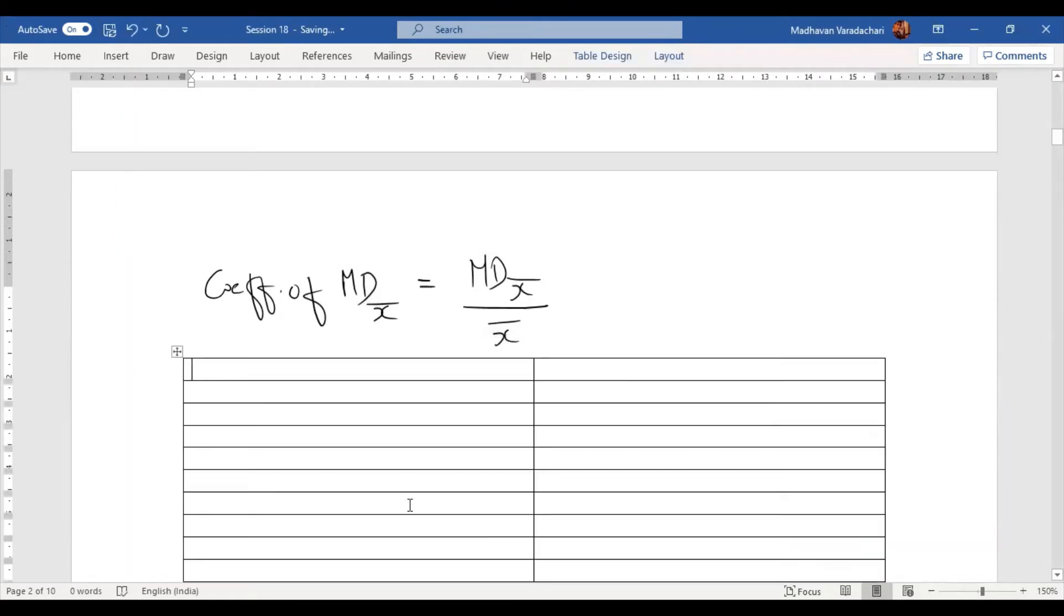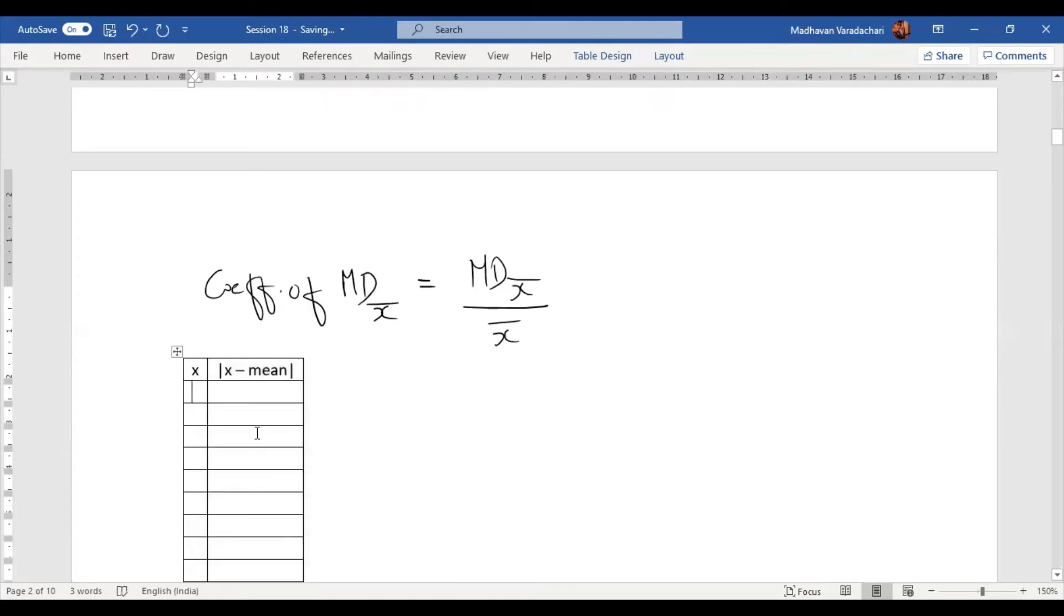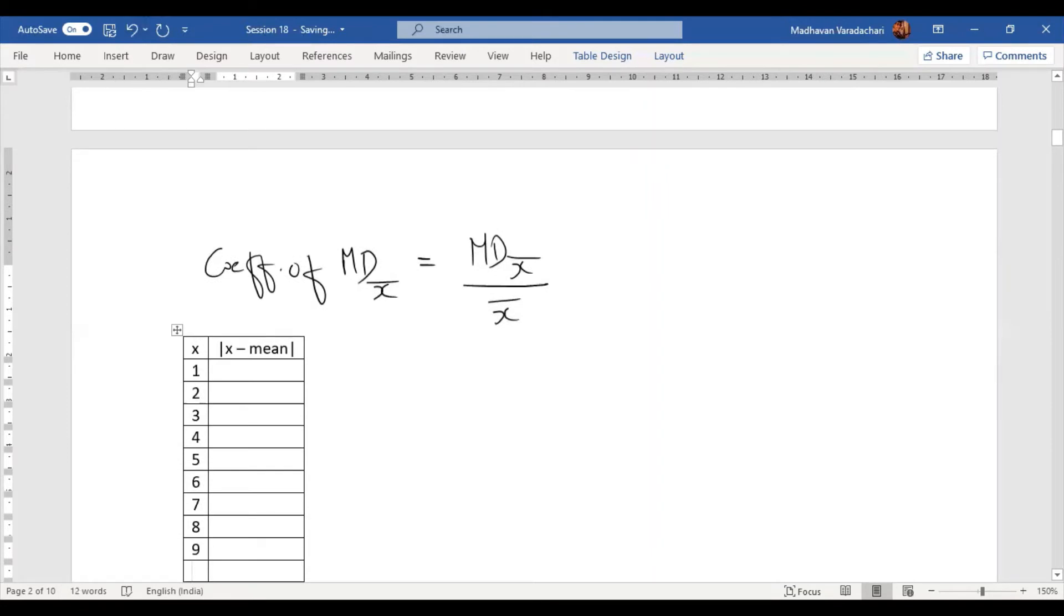So here I will say x. Here it will be modulus of x minus mean. The x values are 1, 2, 3, 4, 5, 6, 7, 8, 9, and then the total. First of all, we need to find out what is x̄.